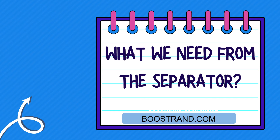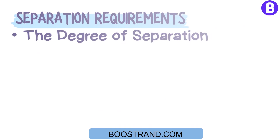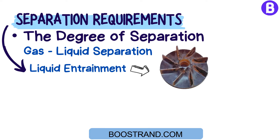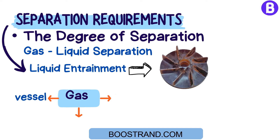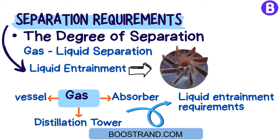In order to choose the separator type and specify its required size, we need first to define what we need from the separator. How much liquid entrainment is accepted in the gas? If the exit gas from the vessel is entering a compressor, liquid entrainment may cause damage to the compressor, so there shall be stringent separation requirements. However, if this gas is going to another vessel, an absorber, or a distillation tower for further separation, then the liquid entrainment requirements can be relaxed.